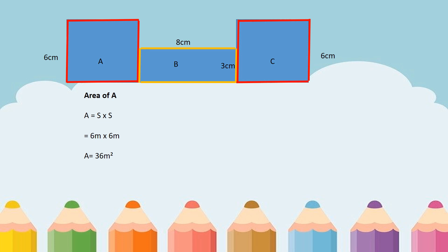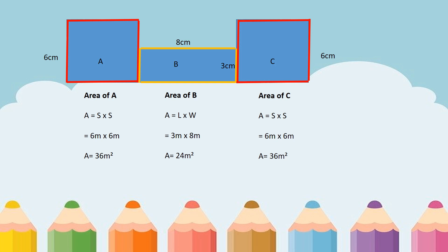To get the area of rectangle B, we use the formula A equals L times W, or length times width. For the length we have 3 meters and for the width we have 8 meters. Three meters times 8 meters is equal to 24 square meters as the area of B. To get the area of C, we use the same formula A equals S times S. We have 6 meters times 6 meters, equal to 36 square meters as the area of C.